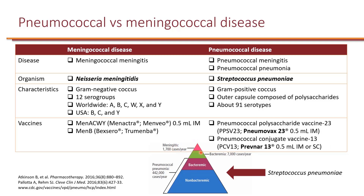Meningitis represents a smaller portion of cases caused by Streptococcus pneumoniae, but the fatality rate is much higher compared to other diseases. So, in order to prevent meningitis, you need two vaccines — you need meningococcal vaccine and you need pneumococcal vaccine.